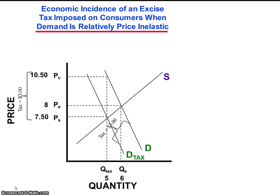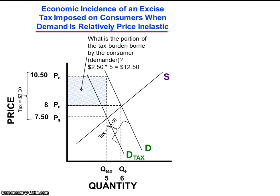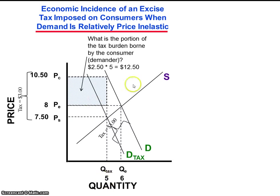The portion of the economic burden of the tax borne by consumers is $12.50, calculated by subtracting the equilibrium price P-E from the price confronted by consumers P-C: $10.50 minus $8 equals $2.50, times the quantity in the taxed market of 5, yielding $12.50. The portion of the economic burden of the tax borne by consumers is represented by the shaded rectangle.